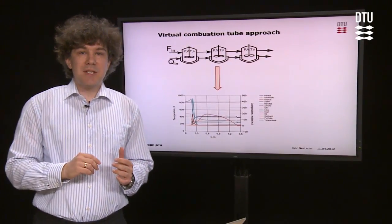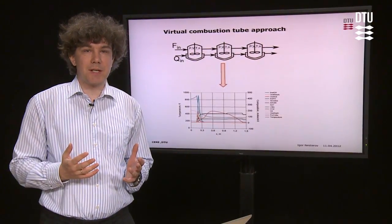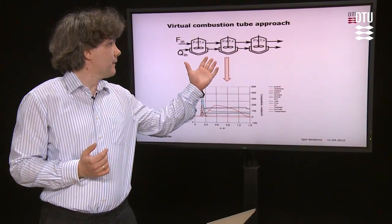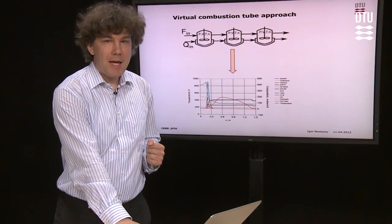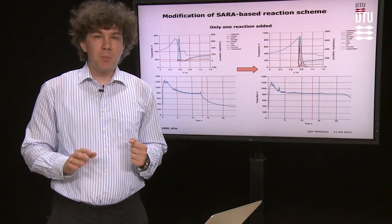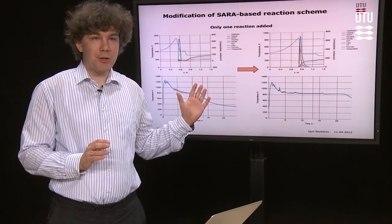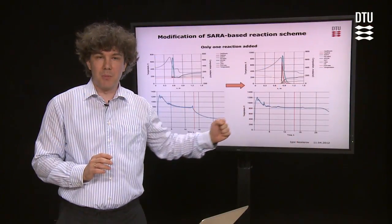I'd like to discuss how this complex process can be modeled using the virtual combustion tube approach, and how small changes to the model — like the addition of only one reaction — can change the behavior of the system from unphysical to a reliable one.